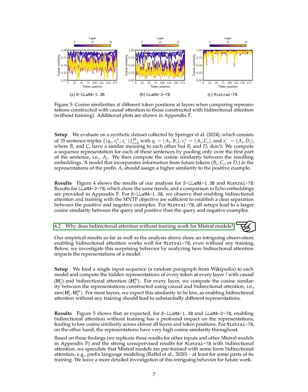We expect the similarity to be low for most layers since bidirectional attention without training should result in significantly different representations. Our analysis shows that enabling bidirectional attention without training has a significant impact on representations for S-LLaMA-1.3b and LLaMA-2-7b, leading to low cosine similarity across most layers and token positions. However, for Mistral-7b, the representations exhibit very high cosine similarity consistently. Based on these findings, we speculate that Mistral models may be pre-trained with some form of bidirectional attention, such as prefix language modeling, during certain parts of their training.